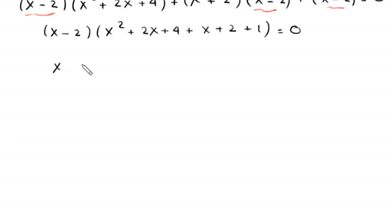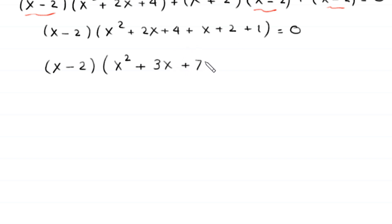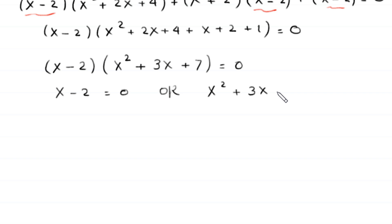Next, x minus 2 times x squared plus 3x plus 7 is equal to 0, since 2x plus x gives 3x and 4 plus 2 plus 1 gives 7. From here, either x minus 2 equals 0, or x squared plus 3x plus 7 equals 0. From the first equation we get x equals 2.